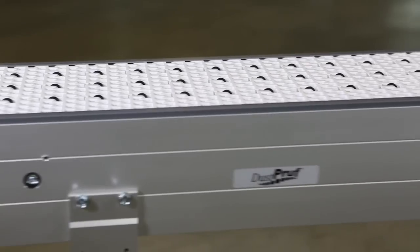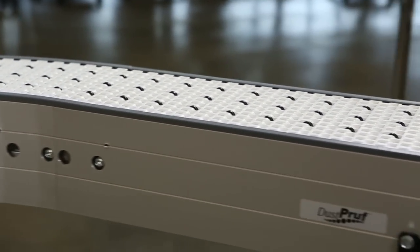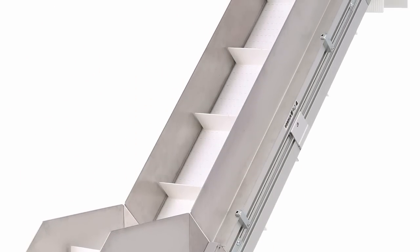The 3200 Modular Belt Conveyor is available in a variety of configurations including straights, Z-frames, curves, nose-overs, and horizontal to inclines.